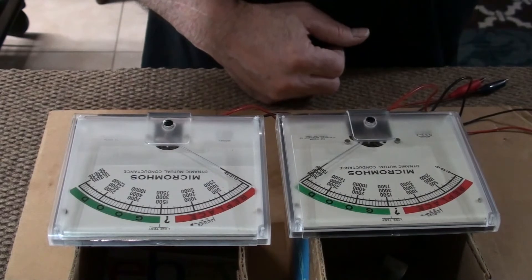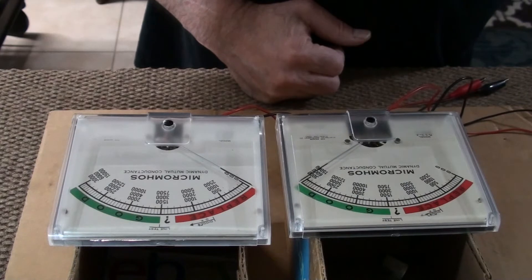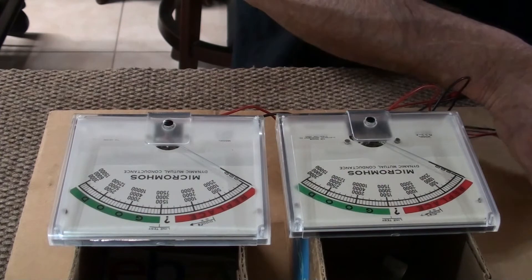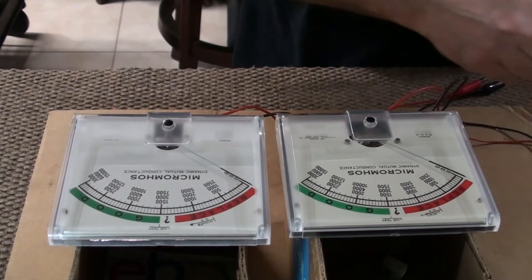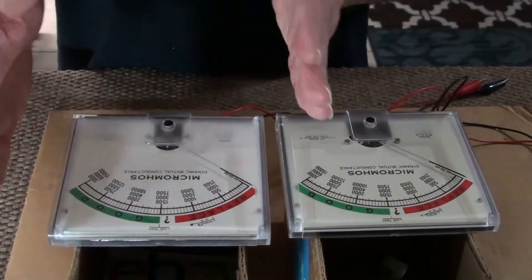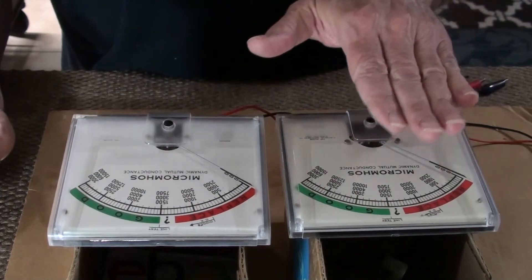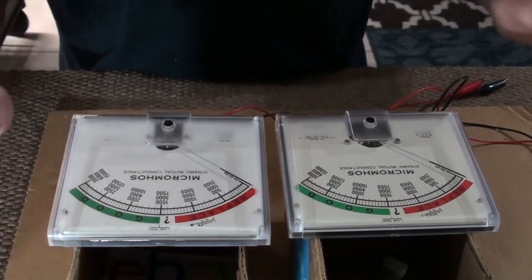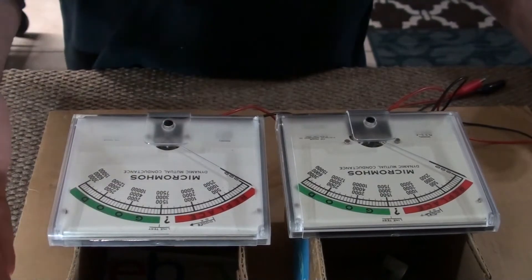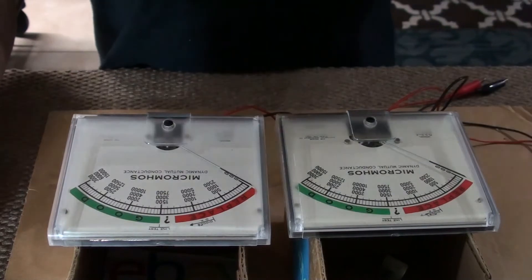Look at that. 500 microampers. That is right on the money. It bounces around quite a bit, but that's the nature of these Hickok meters. Good working meter. This one looks nicer. The scale is cleaner. It's not yellow like this one. I'm not going to make any changes though. This one is clean, destaticized. This one is clean, destaticized. A big difference in the meters.